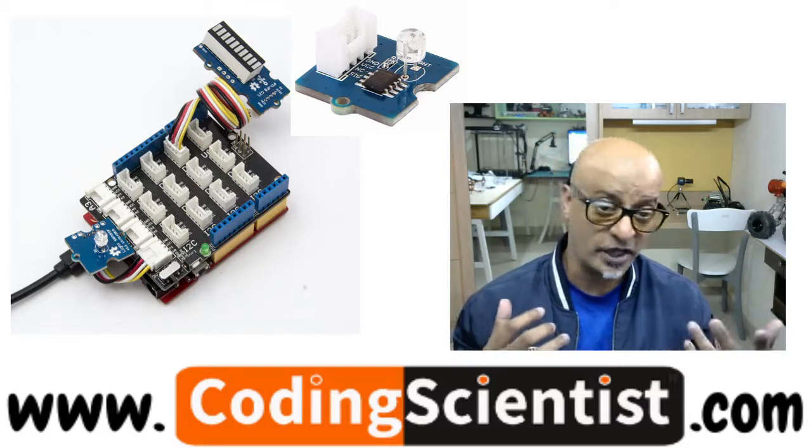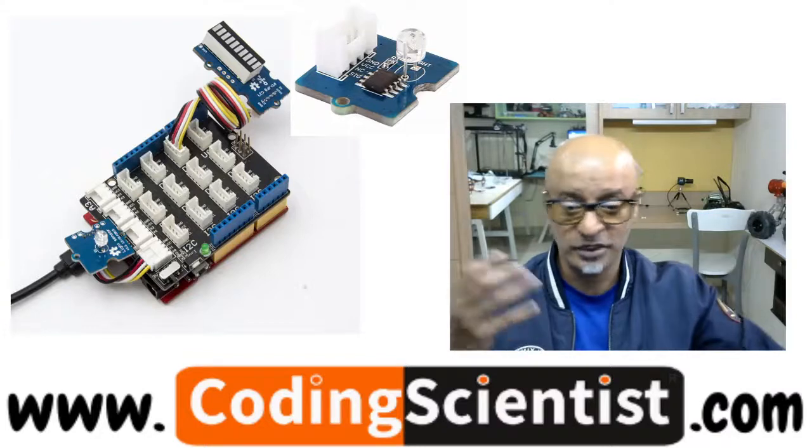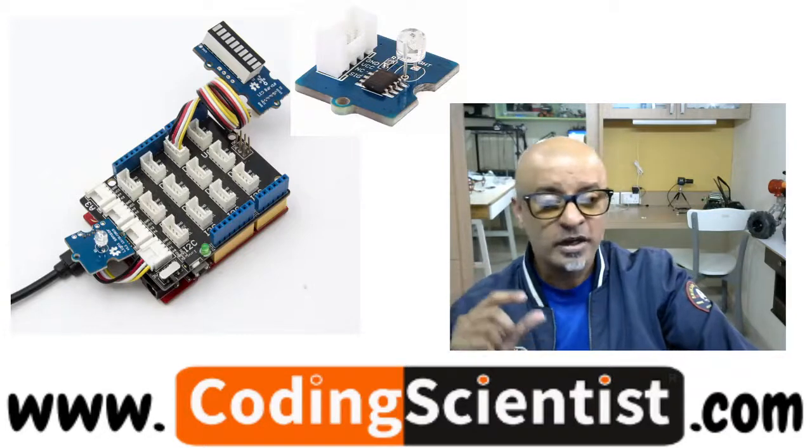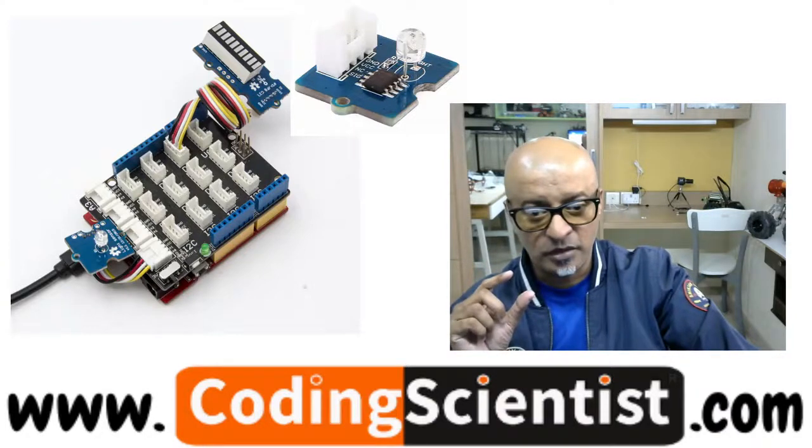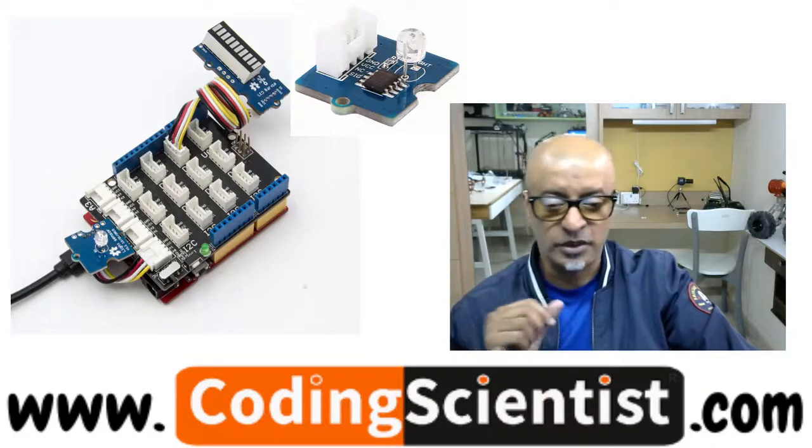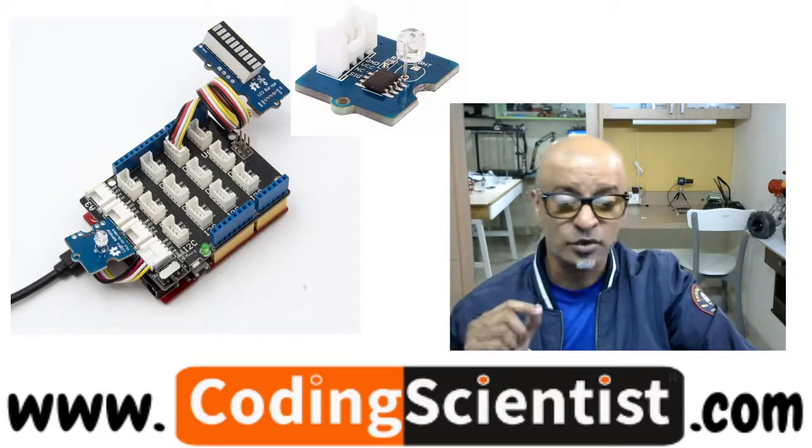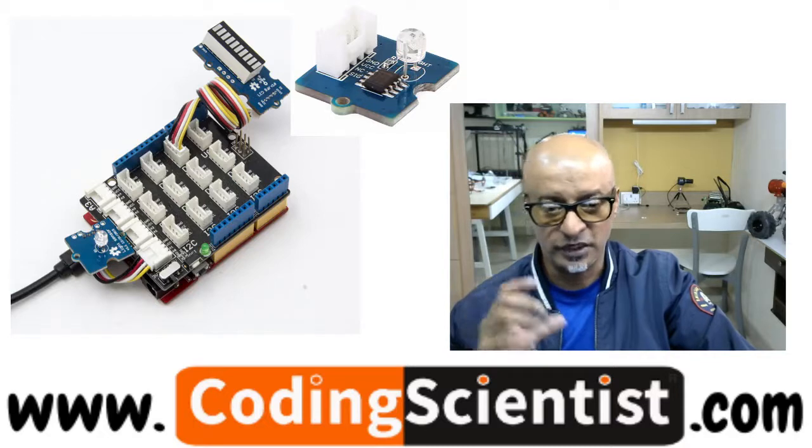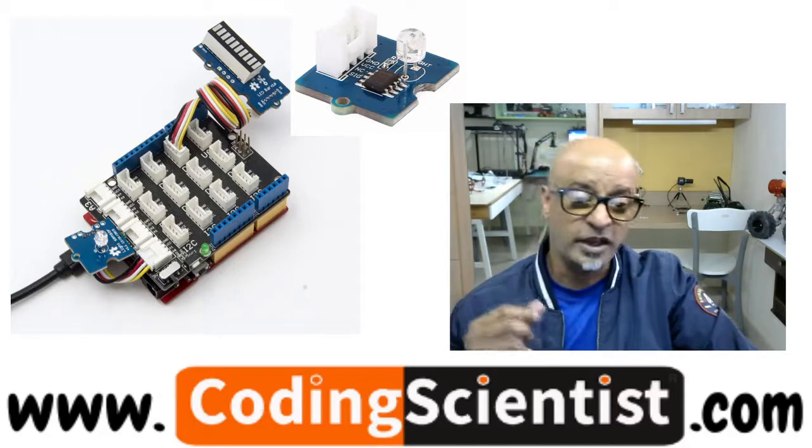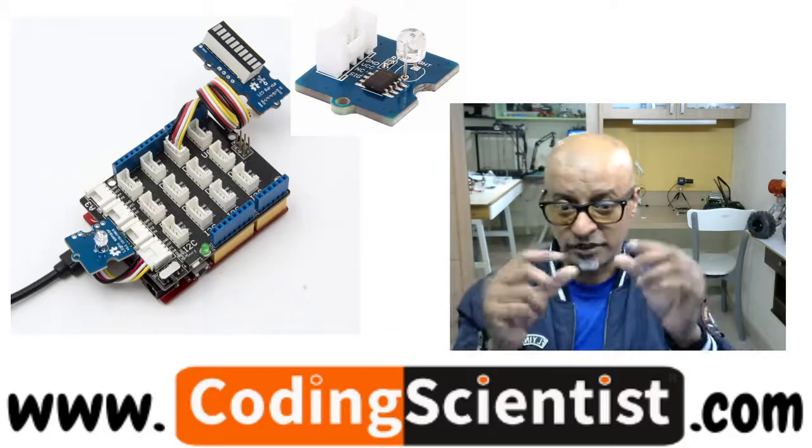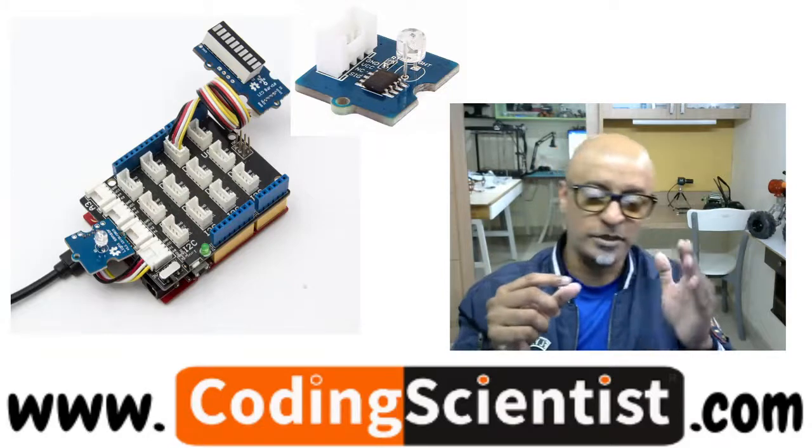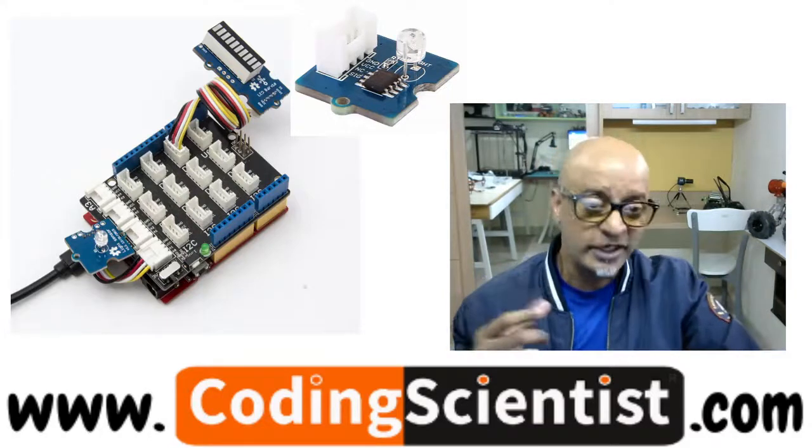Go ahead and pick up the light sensor module from your kit and connect it to the A0 port of our shield, the sensor port shield, and then take the LED bar. There's an LED bar which comes with multiple segments of LED.